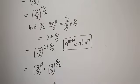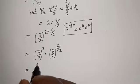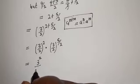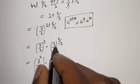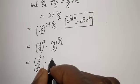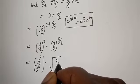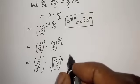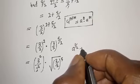Applying the rule, we get (3/2)^2 multiplied by (3/2)^(5/2). Now (3/2)^2 equals 3 squared over 2 squared, which is 9/4. Similarly, (3/2)^(5/2) can be written as the square root of (3/2)^5.